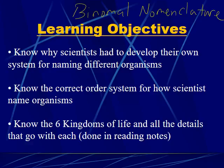The learning objectives today are to know why scientists had to develop their own specific naming system for different organisms, to know the correct order of the system for how scientists name organisms, and to know the general differences between the six kingdoms of life. A lot of this will also have been done via your reading notes in class, and I'll be mentioning some pages from your book.